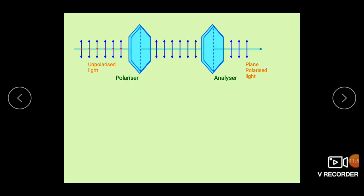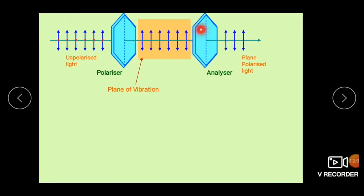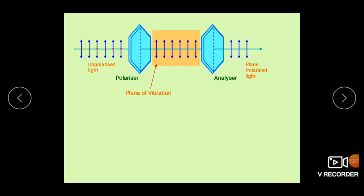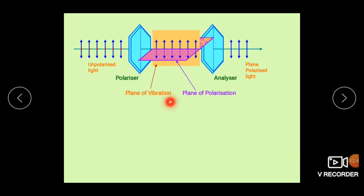When plane polarized light passes through a polarizer, the plane of vibration is the plane in which vibrations of the electric vector are confined. There is another plane perpendicular to the plane of vibration, shown in pink, called the plane of polarization. So the plane of polarization is a plane perpendicular to the plane of vibration, and in the plane of polarization no vibrations are observed.